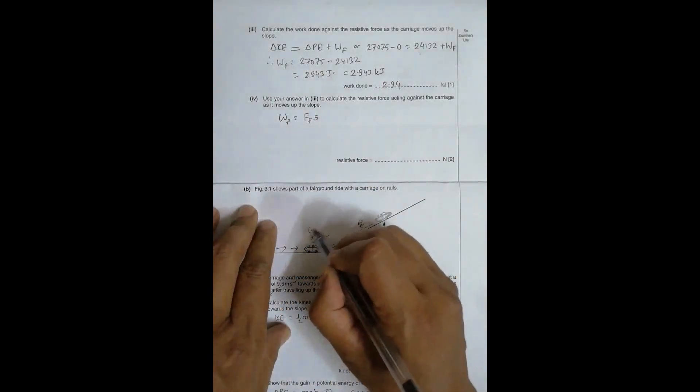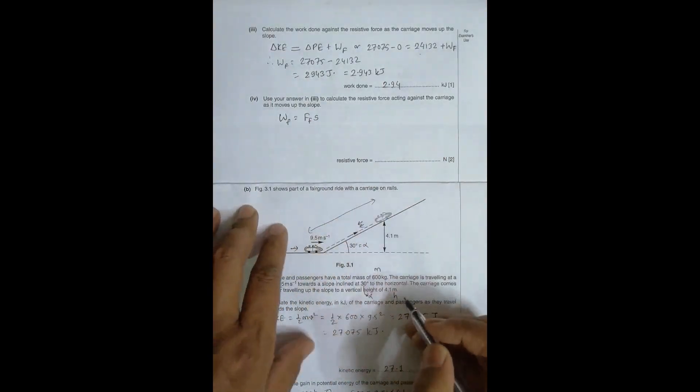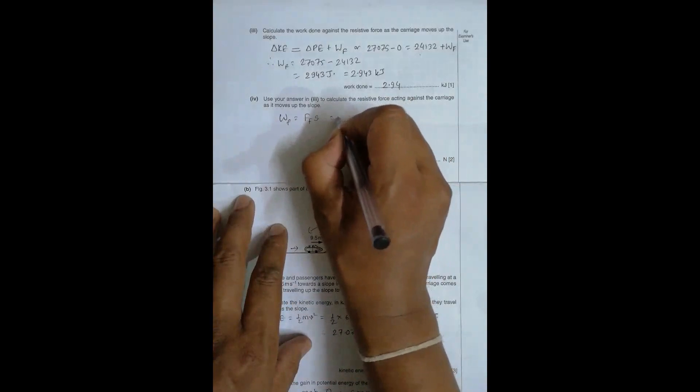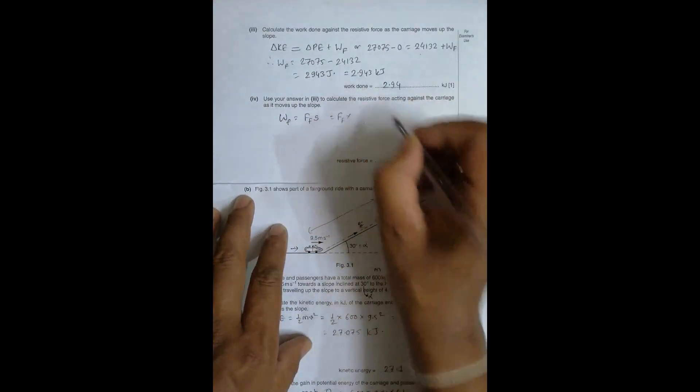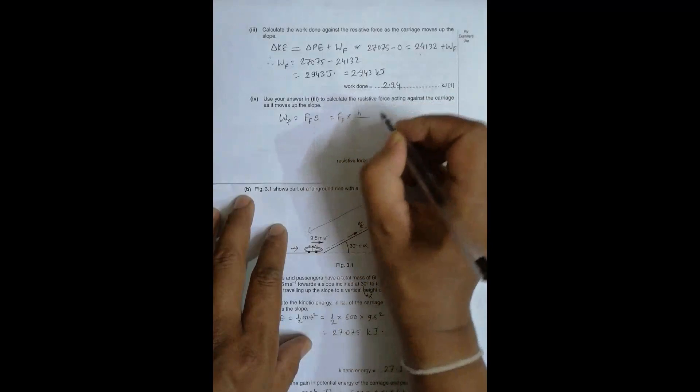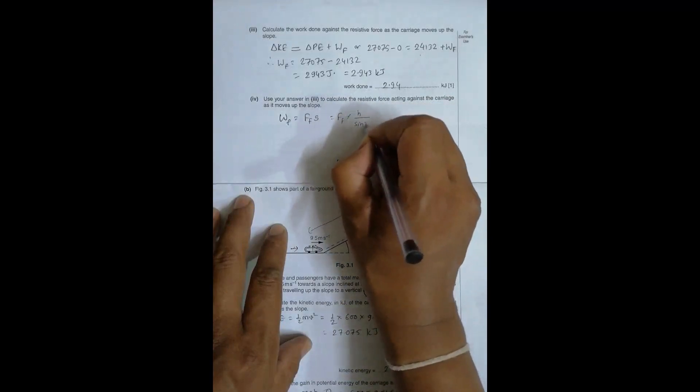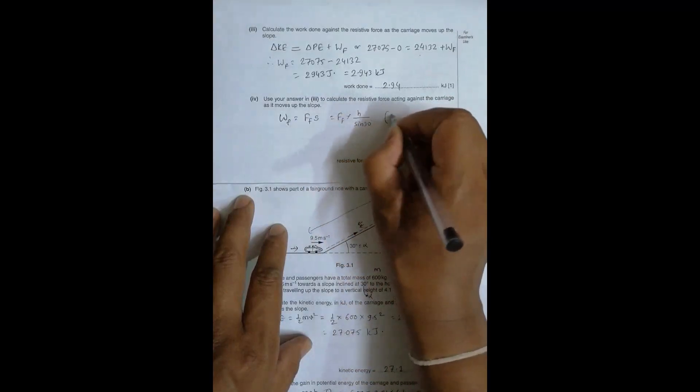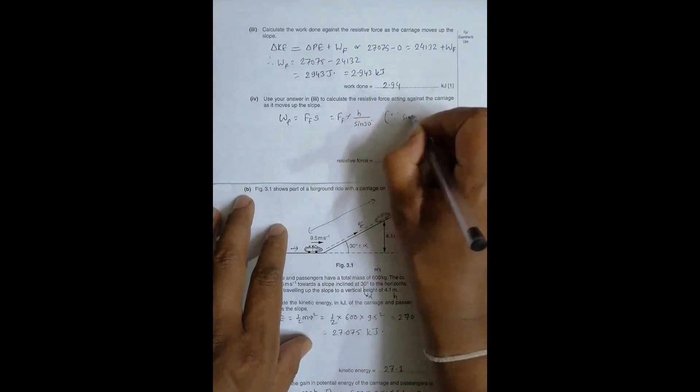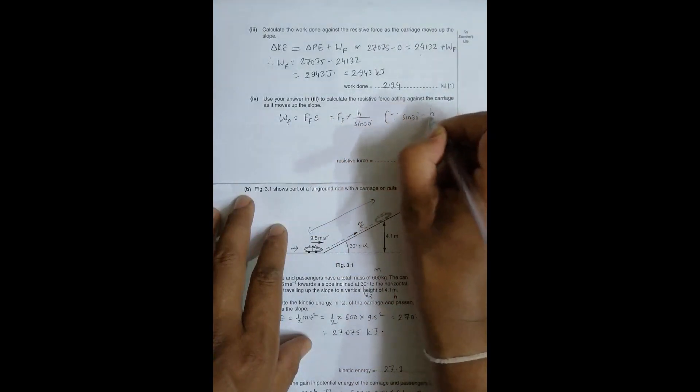Now we need to calculate the resistive force. Work done against friction equals force times the distance traveled. The distance from here to here will be equal to this height divided by sin(30°), because sin(30°) = h/s, so s = h/sin(30°).